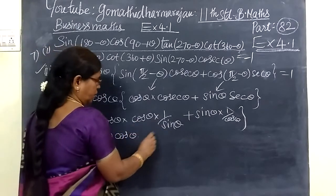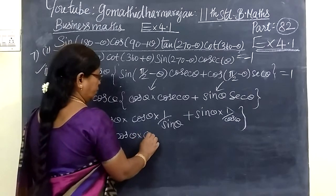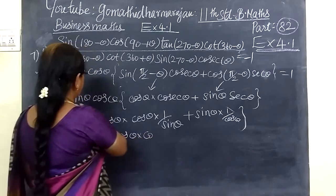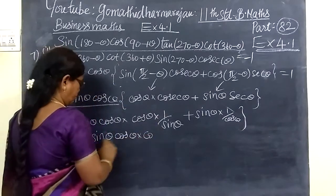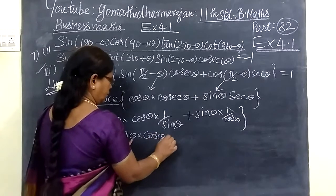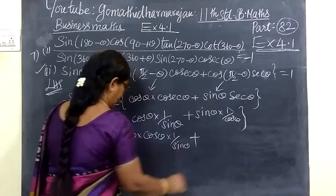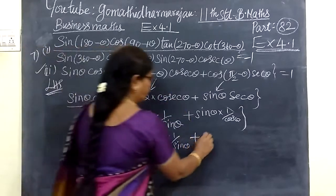When you expand and simplify, you write sin θ cos θ times cos θ times 1 over sin θ plus tan θ sec θ.